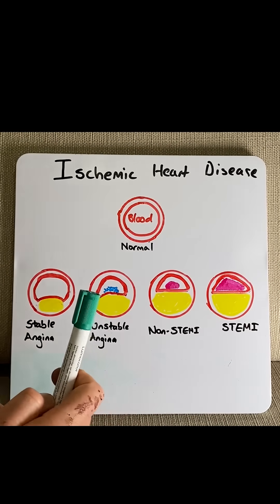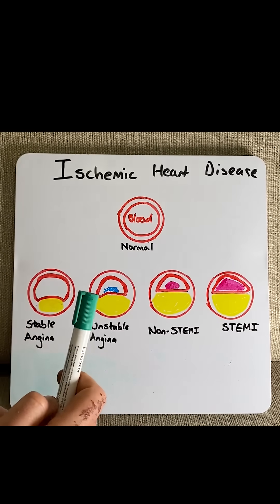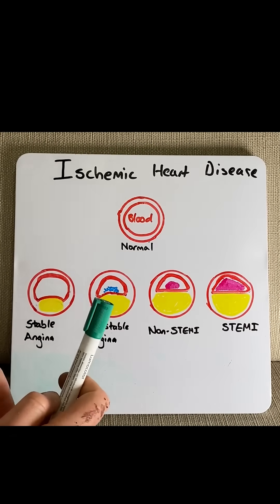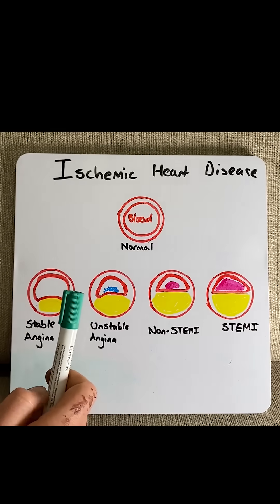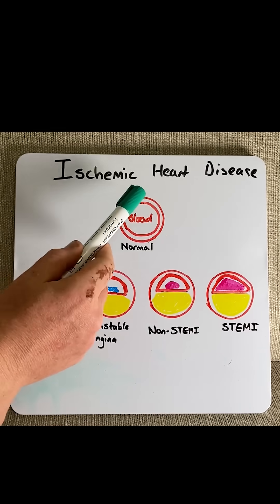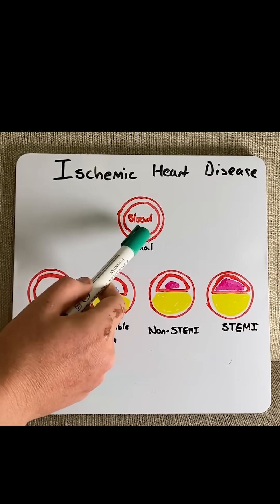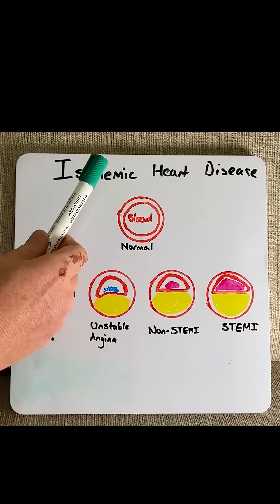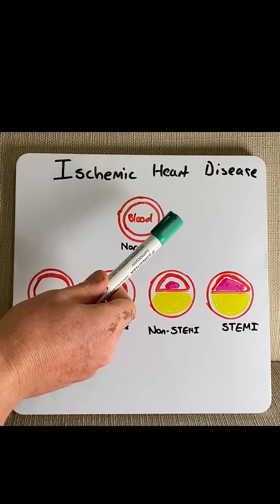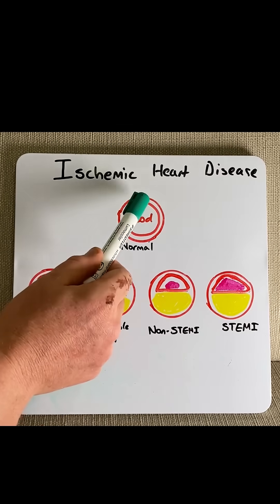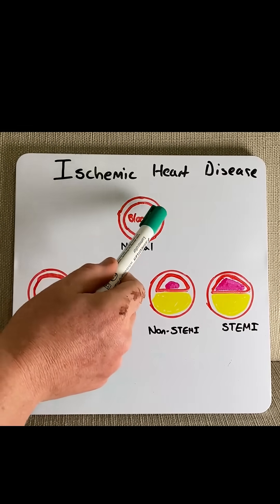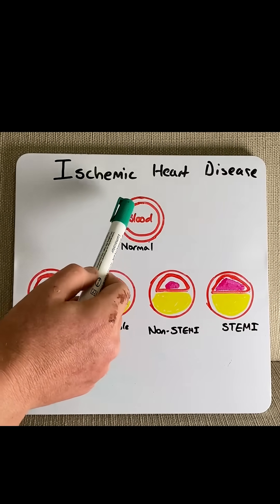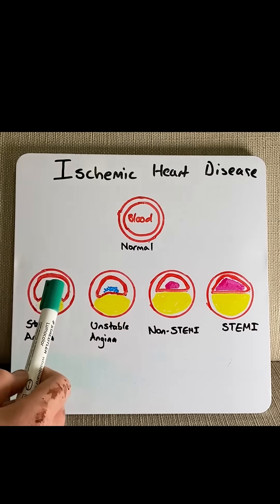Ischemic heart disease or coronary artery disease is where we have a reduction in blood flow to the heart muscle itself. This is due to changes in the coronary vessel. Here what we can see is a coronary vessel in cross section, and we see a normal lumen of the blood vessel, therefore we'll have normal blood flow.